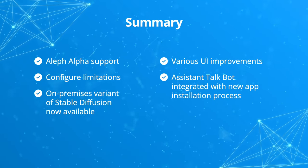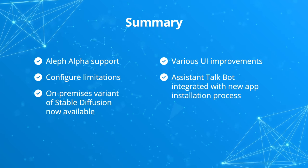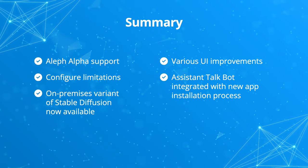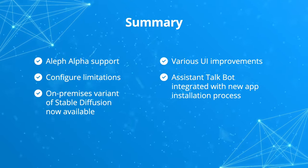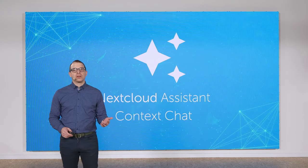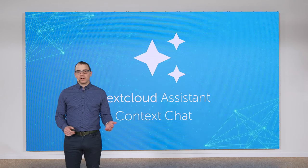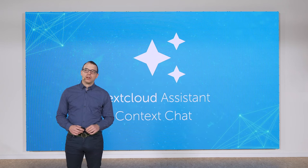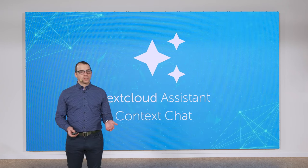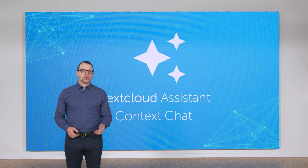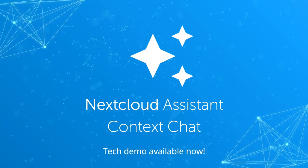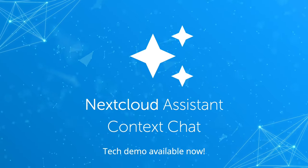What's noteworthy is that we've introduced support for alternative large language models such as Aleph Alpha, with more to come. We've also added the ability to configure usage quotas and added various UI improvements as well. Stable Diffusion is now available on-premises, and the assistant talk bot has been integrated in the new app installation process. But the biggest task we've been working on is to bring Context Chat to the Nextcloud assistant. The new assistant will be vastly better at helping you with your work because it knows both you and your work — and yet, this all happens entirely on your own server or remote AI service of your choice. The best part is that we're also making a tech demo available of the Nextcloud assistant with Context Chat, so you can have a look and give it a try.